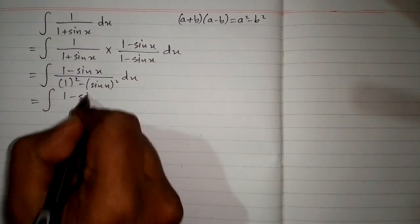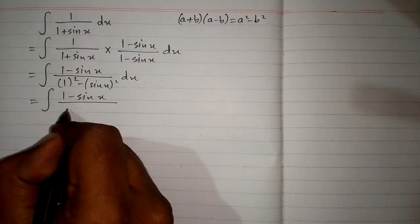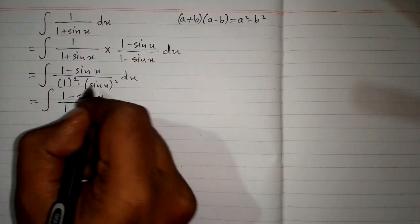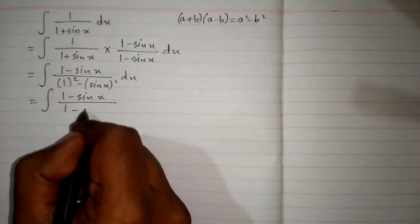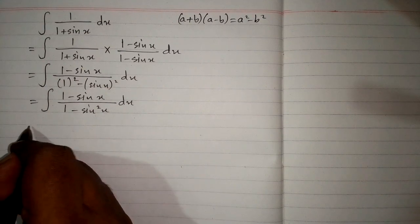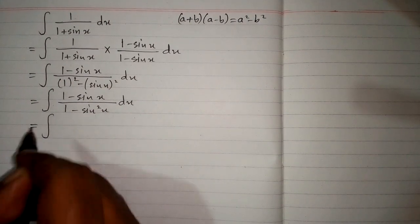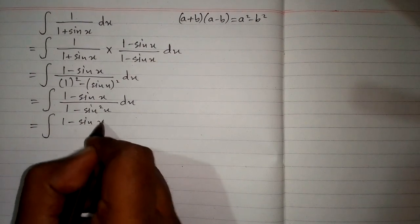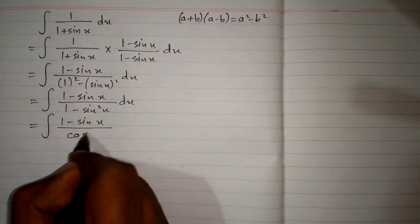This can be written as 1 minus sin x upon 1. The square of 1 is 1 and the square of sin x is sin square x. Now 1 minus sin square x is cos square x.